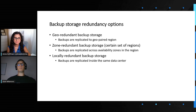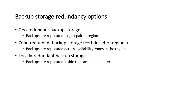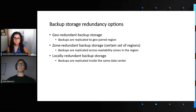Yes. As you can probably see on the slide, recently we have introduced a couple of additional options for backup storage redundancy. Besides the default geo-redundant backup storage, which replicates backup data to the geo-paired region, there is a zone-redundant backup storage option that replicates backups across different availability zones in the same region. There is also locally redundant backup storage that replicates data inside the same data center. While geo- and locally redundant backup storage options are available in all regions, zone-redundant backup storage is specific to regions that support availability zones and where storage also supports zone replication.